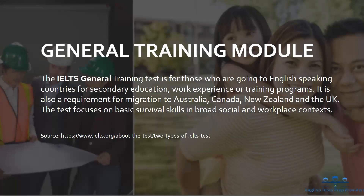In a nutshell, the difference between the two modules is that academic measures your English for academic purposes, while general training measures your English in the workplace context. Make sure that you know which module you are going to take.